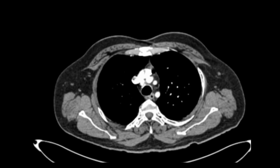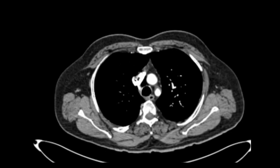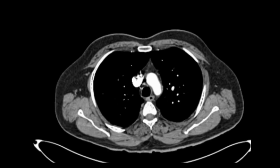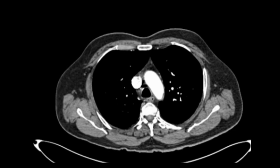The carotid branches end and now we can see the arch of the aorta. Here is the SVC and the trachea.